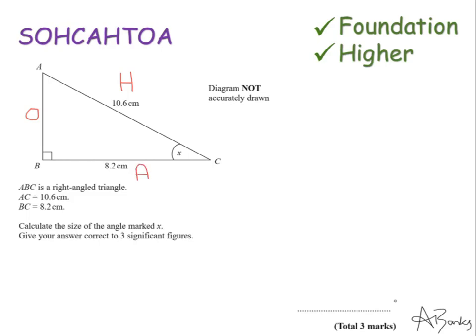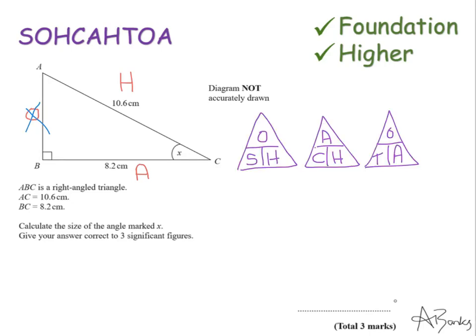This time, the side that I don't know anything about and I'm not really interested in is this O over here. So I'm going to cross that out. Now I need to draw out my formula triangles for SOHCAHTOA. This time, I'm looking for a formula triangle that has A and H in it. So it's going to be the middle one here, the CAH.